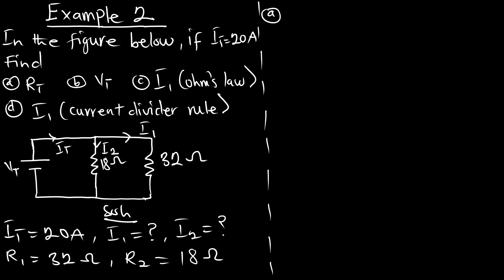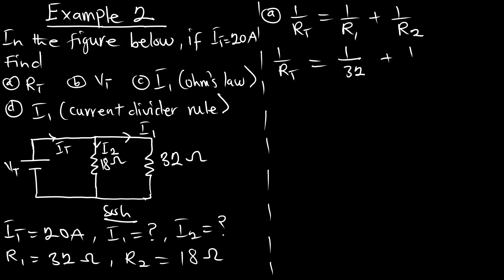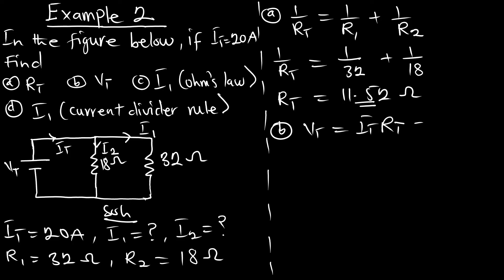Starting with the total resistance: one on Rt equals one on R1 plus one on R2, so one on Rt equals one on 32 plus one on 18. When you find the inverse, your answer is going to be 11.52 ohms. This is the total resistance in the circuit. For part b, finding Vt from Ohm's law: Vt equals It times Rt, so 20 amperes multiplied by 11.52 ohms. The total voltage in this circuit is 230.4 volts.